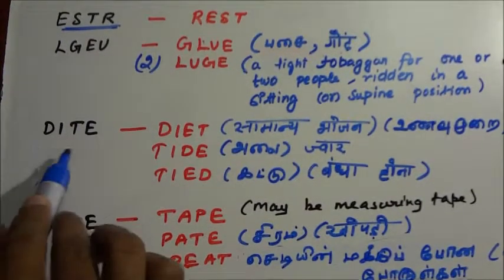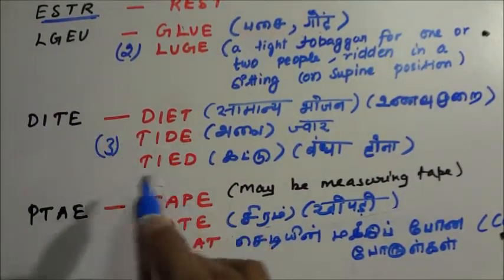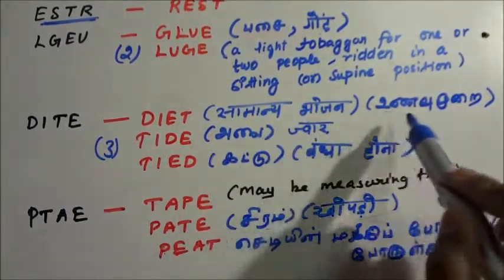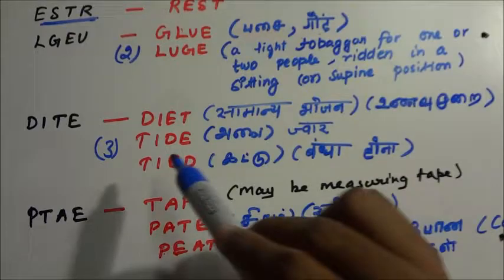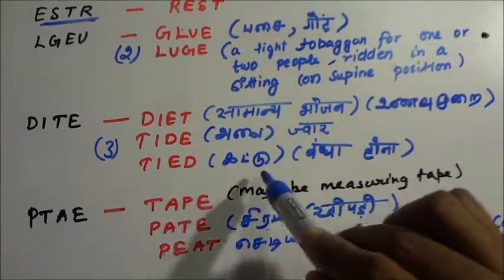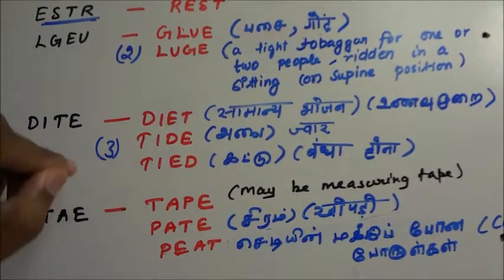D-I-T-E - from these we can form three words: DIET, TIDE, and TIED. I have given the Hindi and Tamil meanings here. TIDE means waves (in Hindi: lahar), and TIED means to tie something with thread or rope.